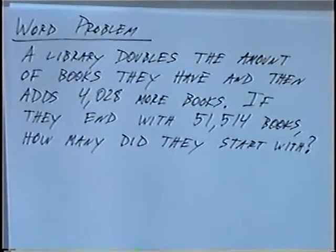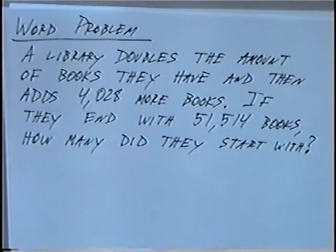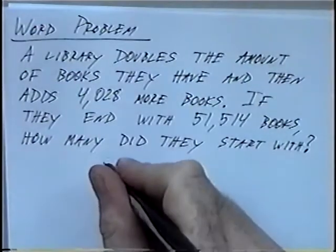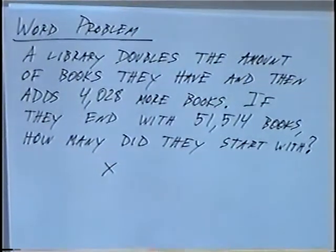A library doubles the amount of books they have and then adds 4,028 more books. If they end with 51,514 books, how many did they start with? To solve this question, we can write an equation and then solve for the variable. If we're looking for the number of books that they started with, we can let that be x, a variable that we can solve for.